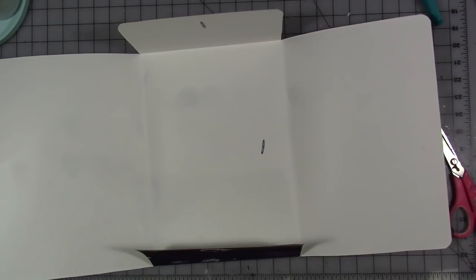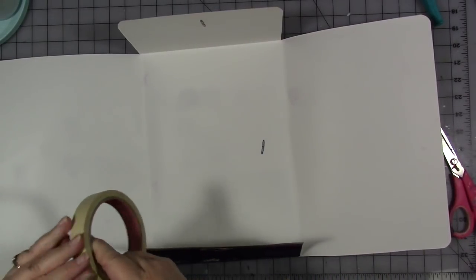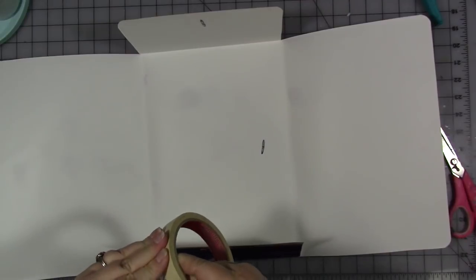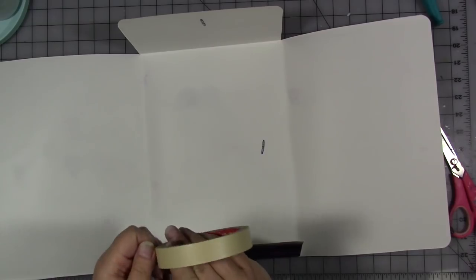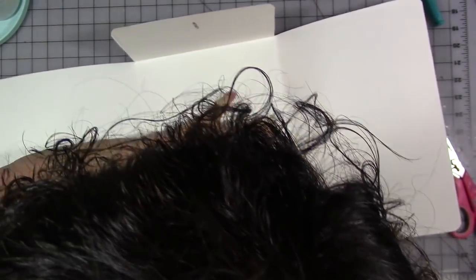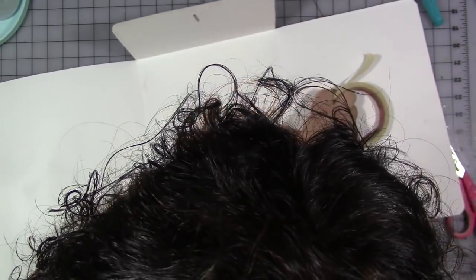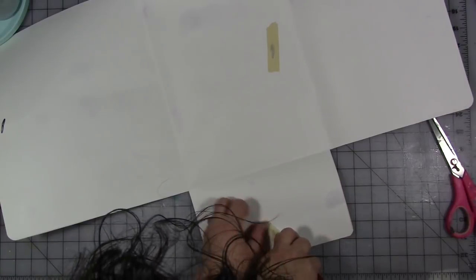And then we're gonna open that. Then we're gonna take some masking tape and we're gonna cover up these little sharp edges of the brads so they don't scratch into the cards. So I'm gonna just cover them with a piece of masking tape, push it down really well.